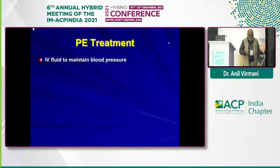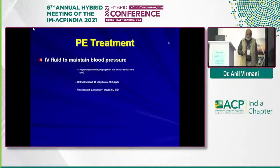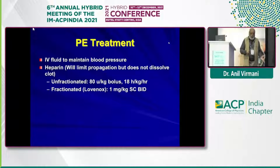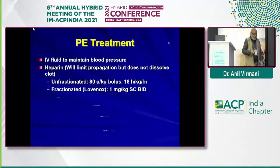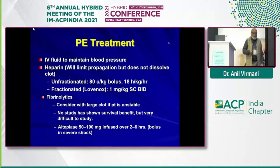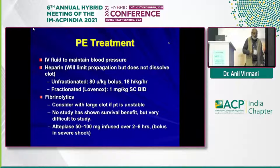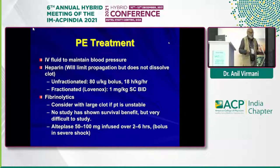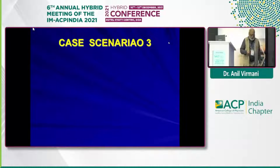Treatment for pulmonary embolism includes IV fluids to maintain blood pressure, and heparin — either unfractionated or fractionated; normally we give low molecular weight heparin. Fibrinolytics are not very well used, especially if a large clot is present, as no clear benefit has been shown.